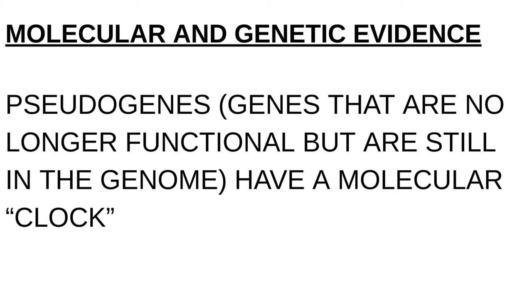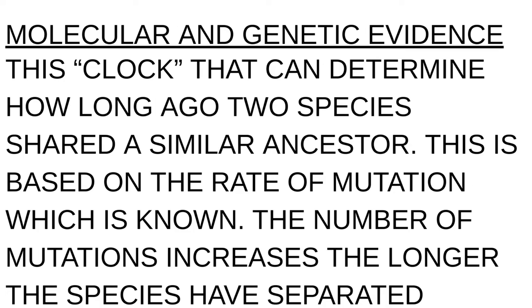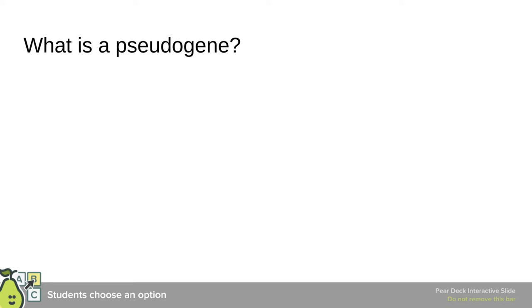There's something called a pseudogene — genes that no longer function but are still in the genome. These can act as a molecular clock. There is a known rate of mutation in DNA, and if you look at these pseudogenes, you'll find that they accrue more mutations the longer two species have been separated from a common ancestor. So based on this known rate of mutation, you'll find more mutations the longer those two species were separated.